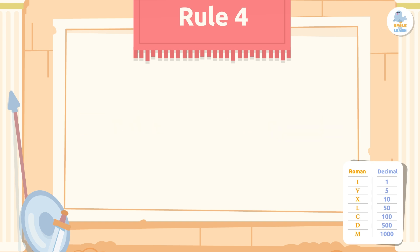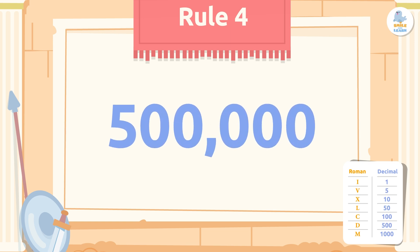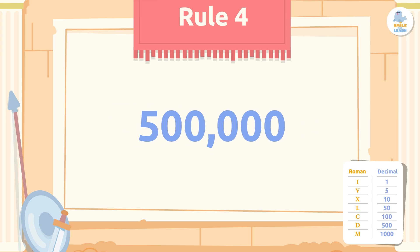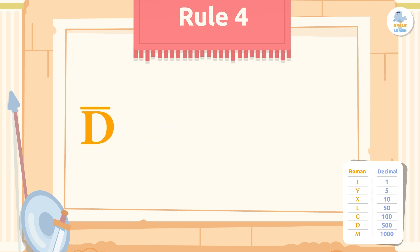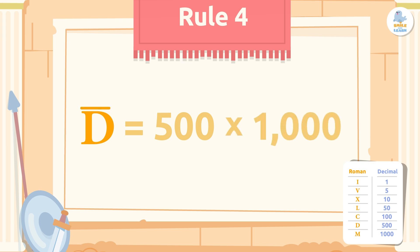Let's look at another example: how do you write 500,000 in Roman numerals? To form 500,000, we first write the letter D, which has a value of 500, then place a bar above it to mean times 1,000. We multiply the value of D (500) by 1,000 and get 500,000.